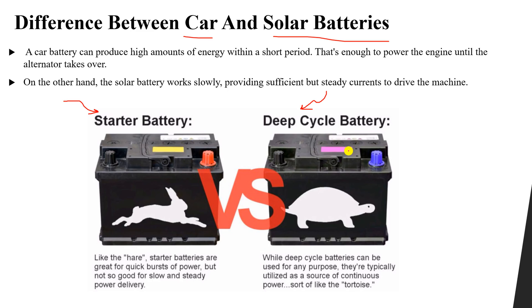You cannot differentiate between a car battery and a solar battery just by looking at them — they appear similar. However, in reality, one is used for car applications and the other for solar system applications. Starter batteries are great for quick bursts of power but not for slow and steady power delivery, while deep cycle batteries are used for providing continuous power.